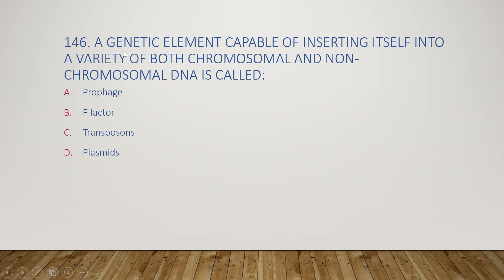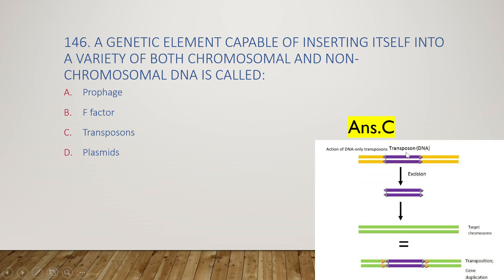The next question: a genetic element capable of inserting itself into a variety of both chromosomal and non-chromosomal DNA is called prophage, F factor, transposons, or plasmid? The right answer is option C, transposons. Transposons can insert their DNA from one site to another — the transposon DNA is excised by transposon genes and inserted into another site of the same DNA. This process is called transposition.